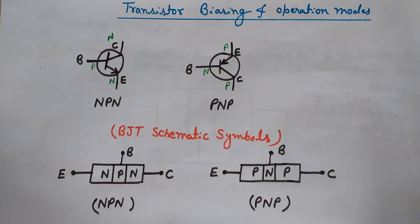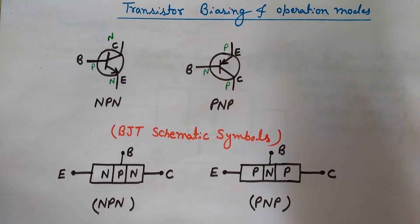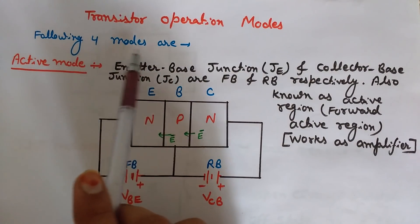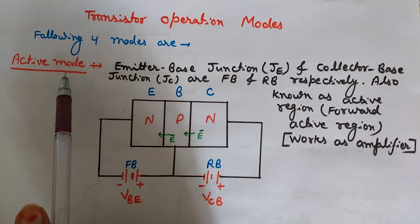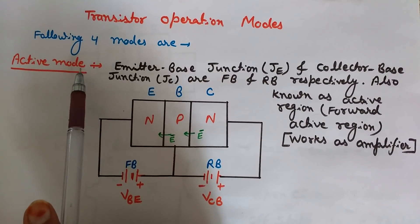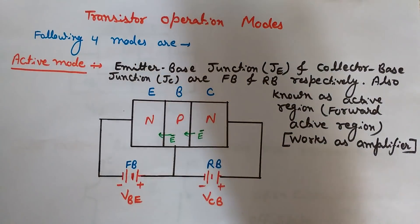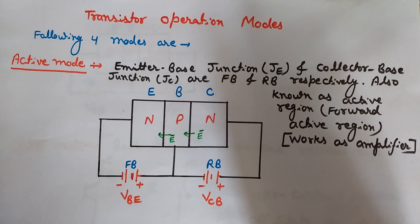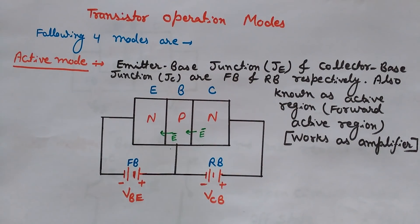We will discuss four kinds of modes of BJT — we can operate it in four different modes by biasing them. The four modes are: first, the active mode; second, the saturation mode; third, the cutoff mode; and fourth, the reverse active mode. Let's discuss them one by one.